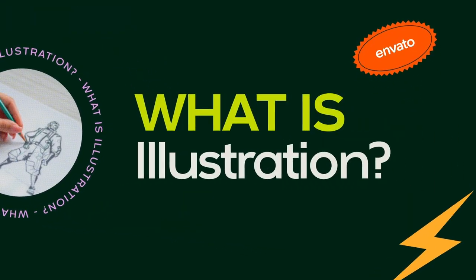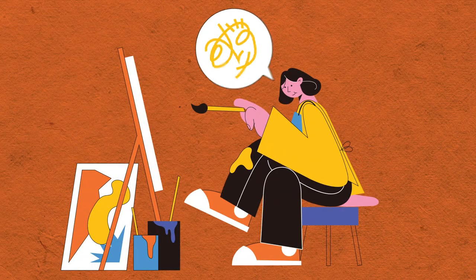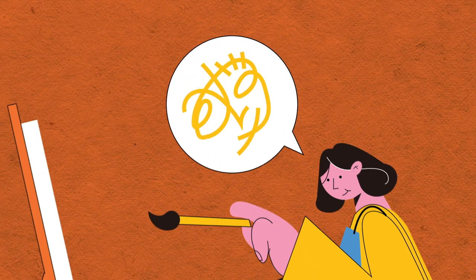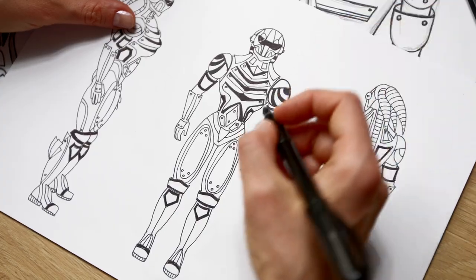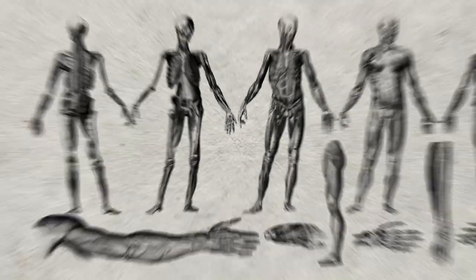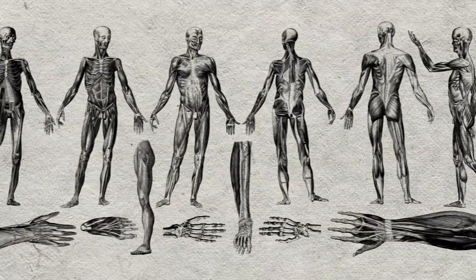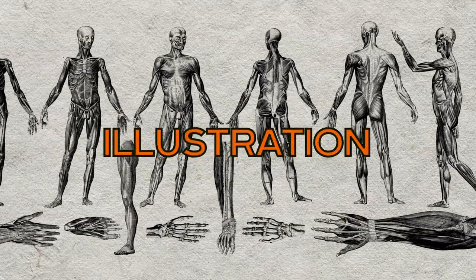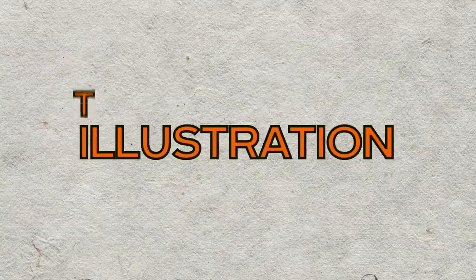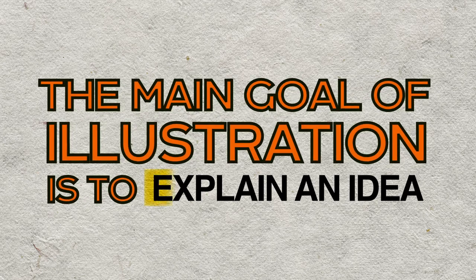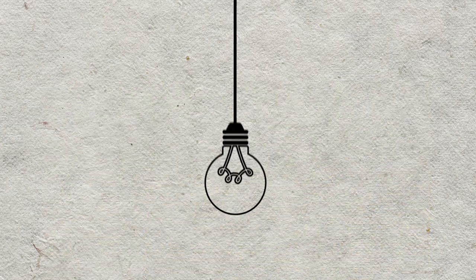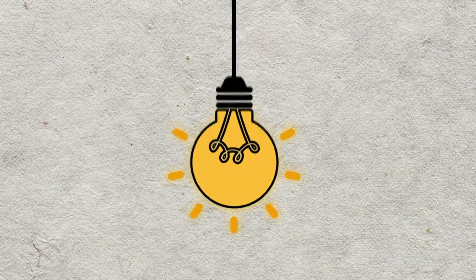What is illustration? An illustration is a visualization made by an artist. Everything from concept art for a video game to a technical drawing of human anatomy counts as illustration. The main goal of illustration is to explain an idea and convey meaning without the need for text.